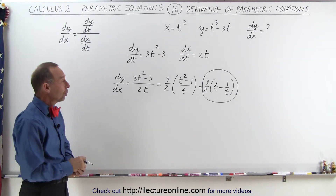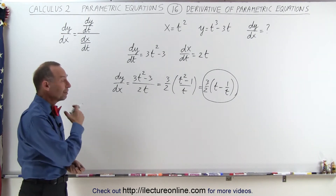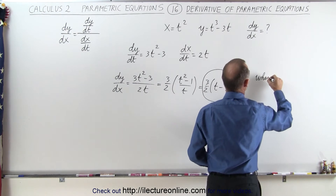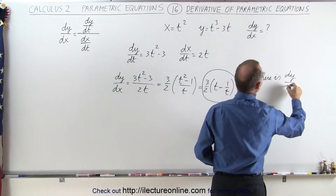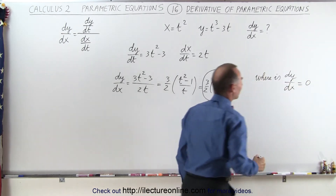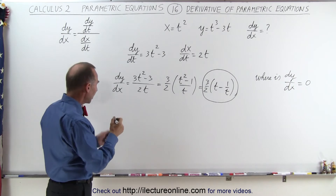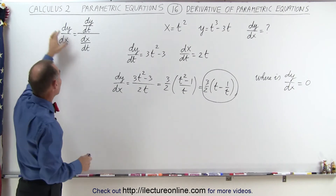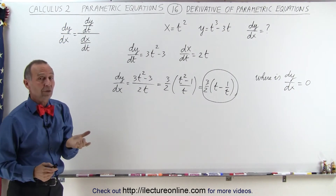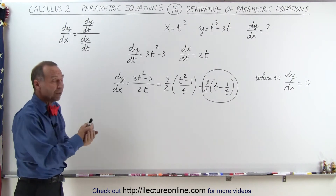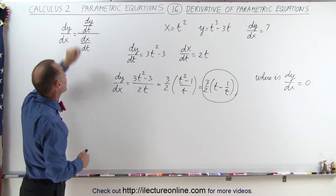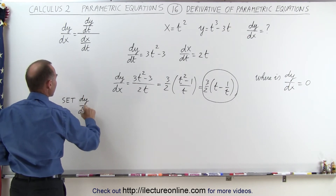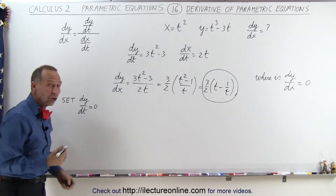So now we may ask ourselves: for which values of t is that derivative equal to 0? We're trying to find where the slope dy/dx equals 0. Since dy/dx is equal to a fraction, dy/dx will be equal to 0 when the numerator is equal to 0. So we can find the points where the derivative is 0 by simply finding where dy/dt is equal to 0. Set dy/dt equal to 0 to find the zero slope of dy/dx.